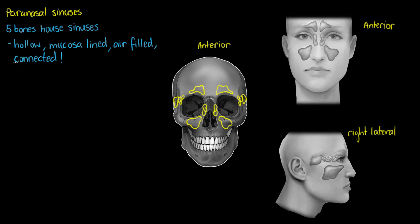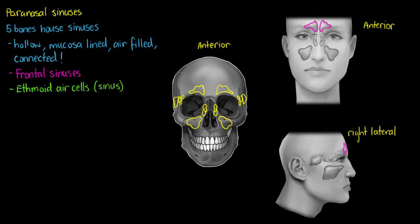The sinuses are all connected so that they can drain away the mucus that they produce. The first sinus we'll look at is our frontal sinuses, located in our frontal bone — we can also see a small portion of it from the right lateral view. Our second set are our ethmoid air cells, or ethmoidal air cells — the ethmoidal sinus — which I'm outlining in green. From the right lateral view, the ethmoidal air cells actually extend quite a way backward, posteriorly.